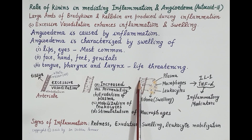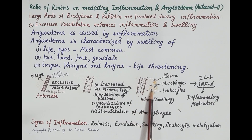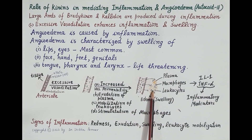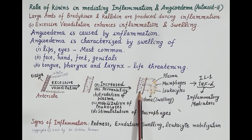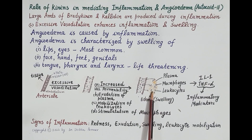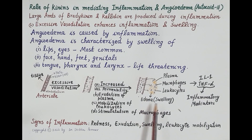As is clear from the diagram, spaces between the endothelial cells increase, and plasma from the blood escapes and moves into the adjoining tissues. Plasma is shown here in yellow. This movement of plasma from the blood vessel to the tissues is called exudation of plasma, and accumulation of this plasma causes edema or swelling.